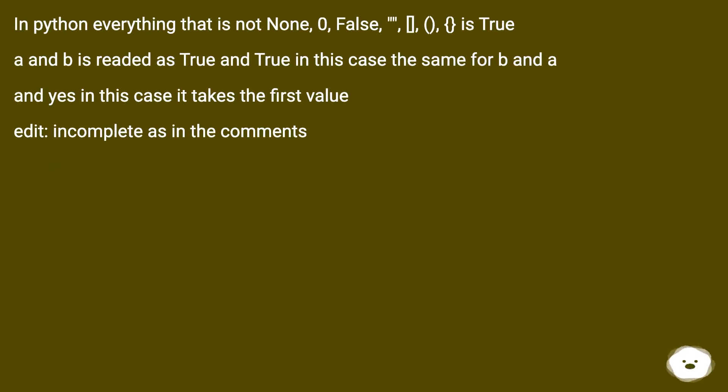In Python, everything that is not None, zero, or false is true. A and B is read as true and true, in this case the same for B and A. And yes, in this case it takes the first value.